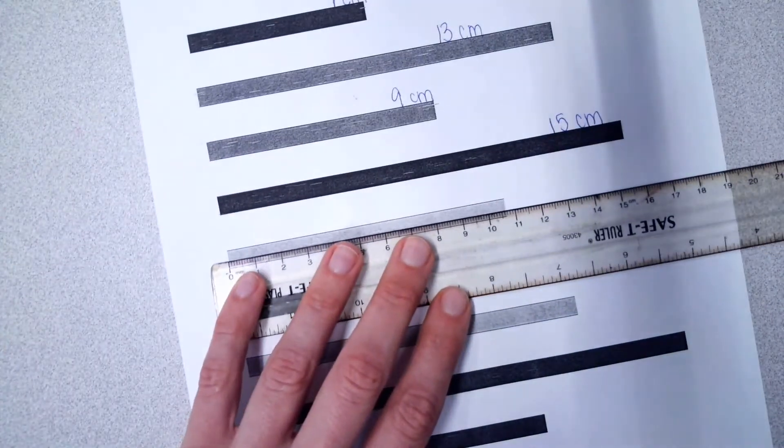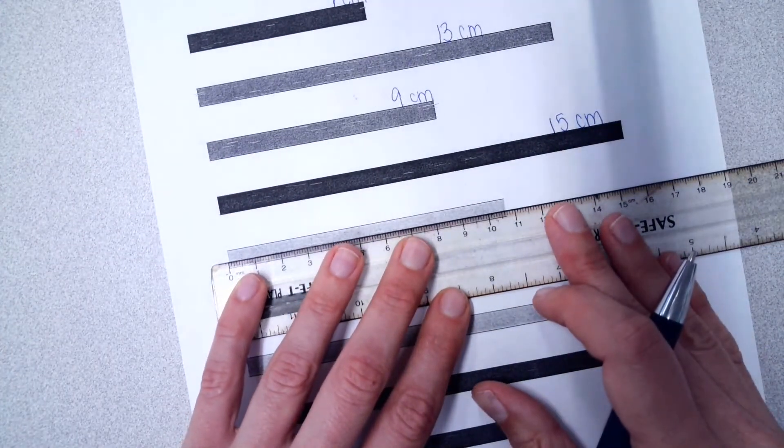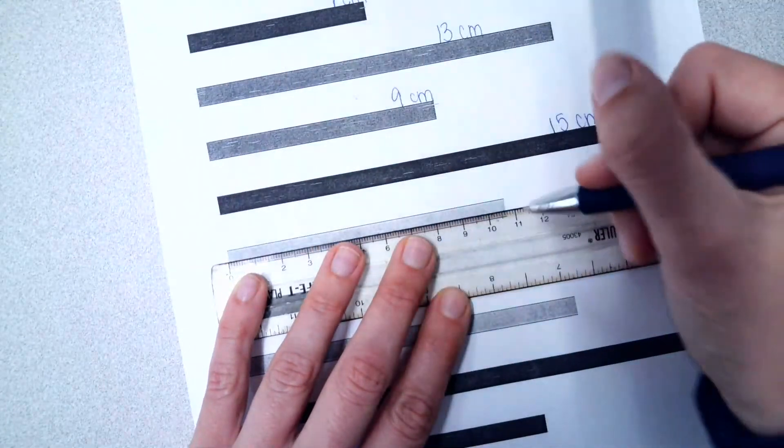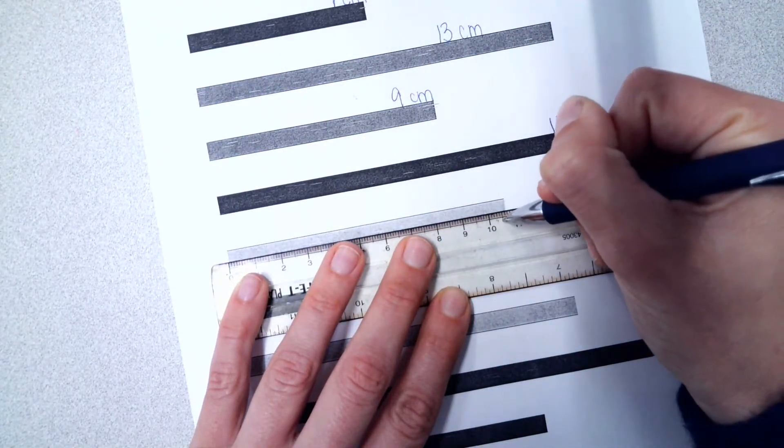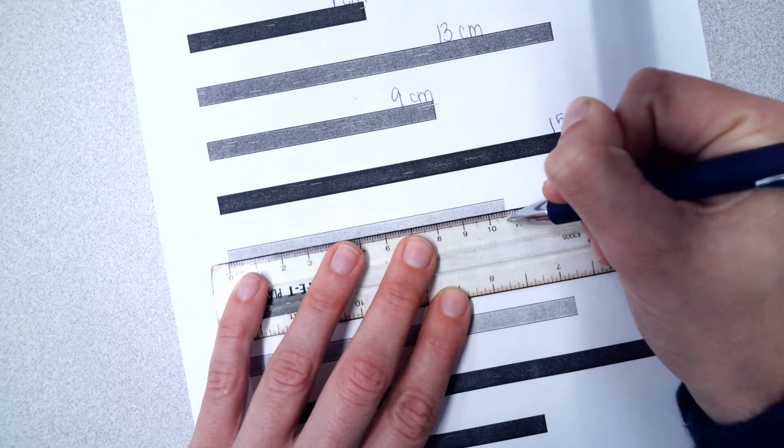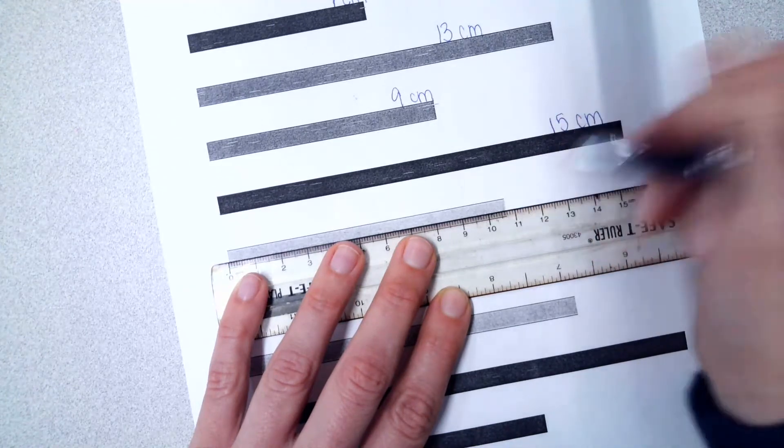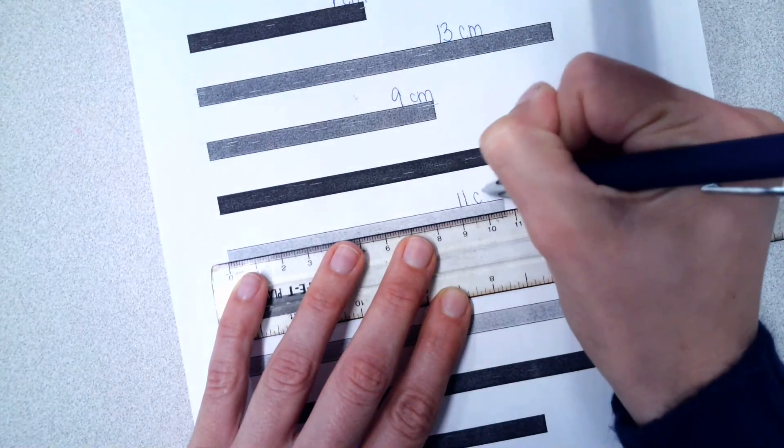This next one I'm going to do, then you'll do the rest by yourself. This lined up at the zero tick, the line ends here, the half tick is here, which means this one is closer to 11 centimeters.